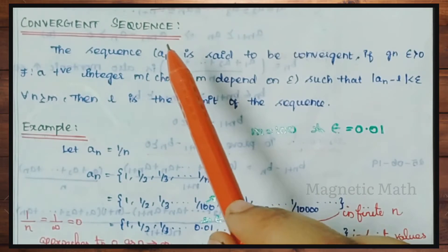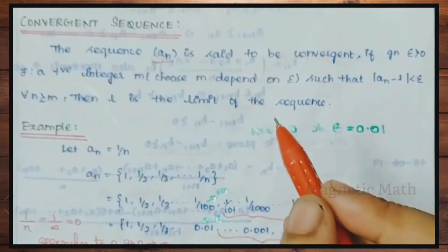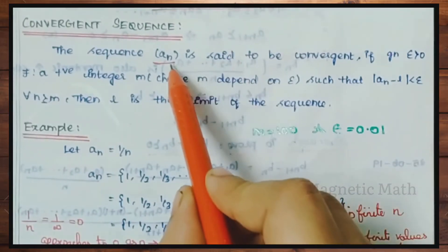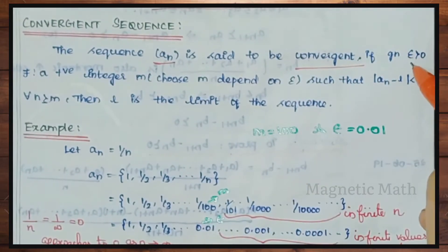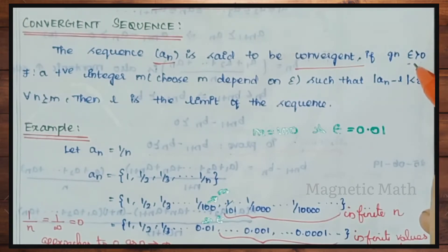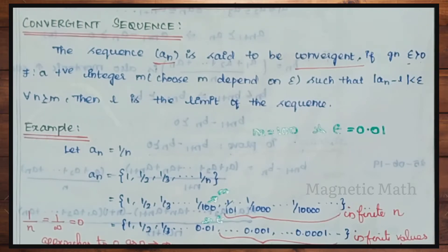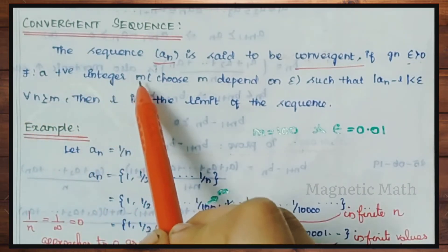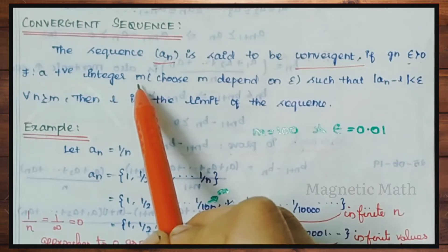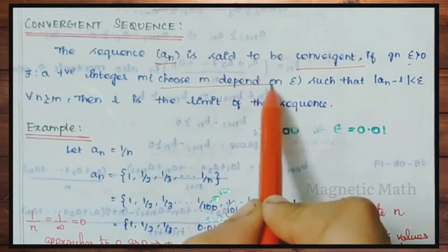Convergent sequence: an is said to be a sequence. When the sequence is said to be convergent, we have epsilon which is greater than 0. That is the least positive integer m. So now I have to choose m, where m depends on epsilon.